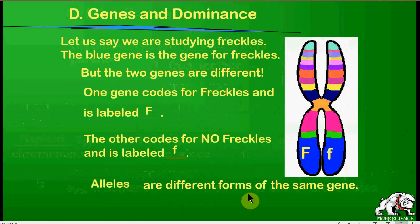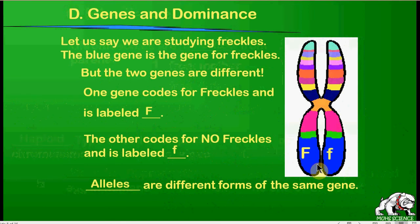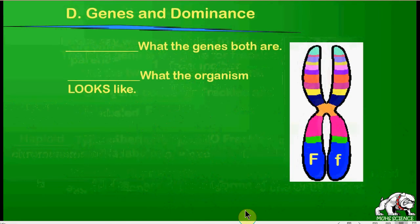You have a gene that codes for freckles where one form means freckles and the other means no freckles. One is considered dominant, one is considered recessive, and these are called different alleles for the same trait. Alleles are different forms of the same gene.